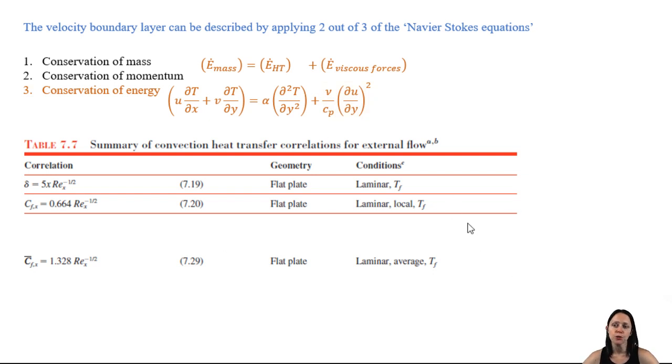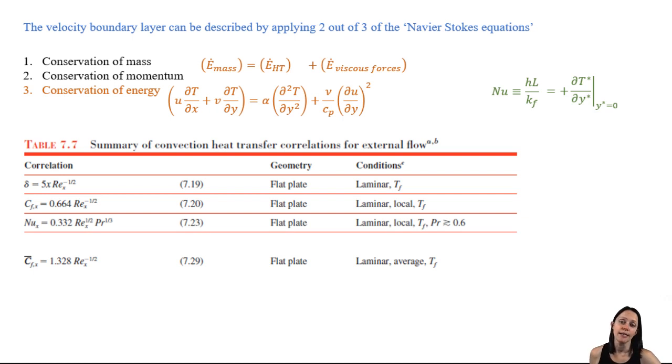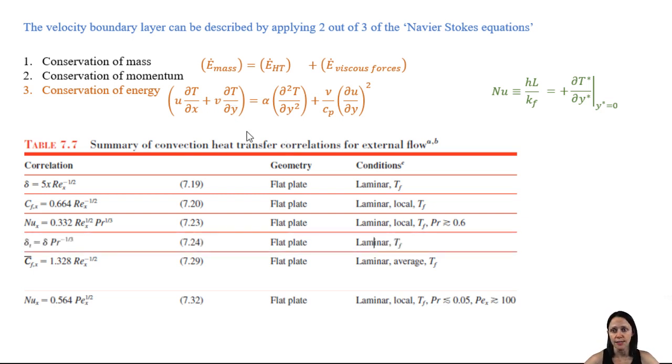So the conservation of energy is used to relate the temperature profile to the velocity profile using a similarity variable that Blasius used. For our purposes, we're just really interested in the solution which gives us the Nusselt number as a function of the Reynolds number and the Prandtl number. Note that this is valid for Prandtl numbers larger than 0.6. If your Prandtl number is very small, like it is for liquid metals, there's another relationship that you should use. That same similarity value solution leads us to the conclusion that for laminar flow, the ratio of the velocity boundary layer to the thermal boundary layer is the Prandtl number raised to the 1/3.